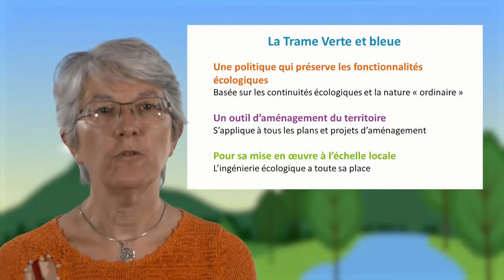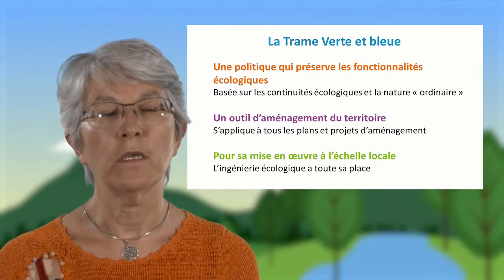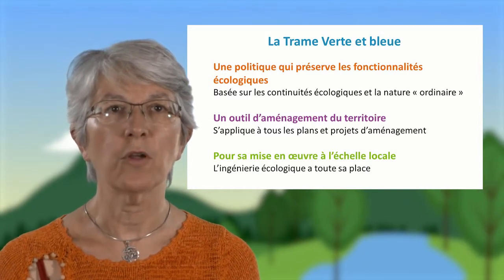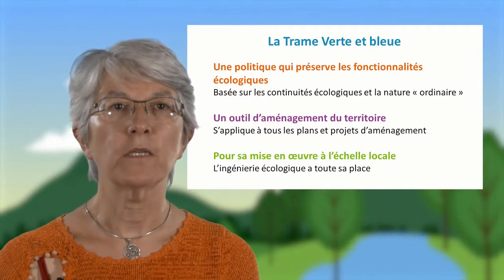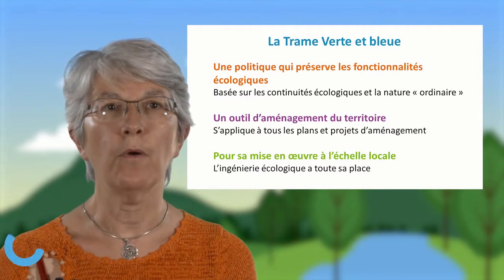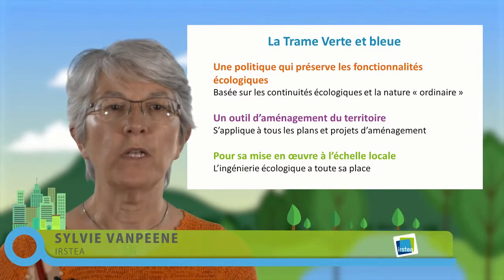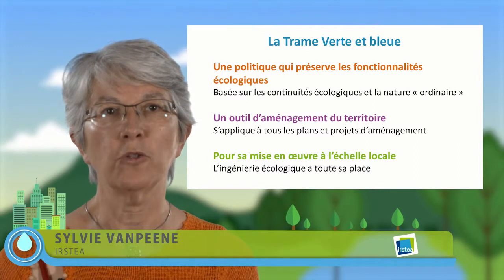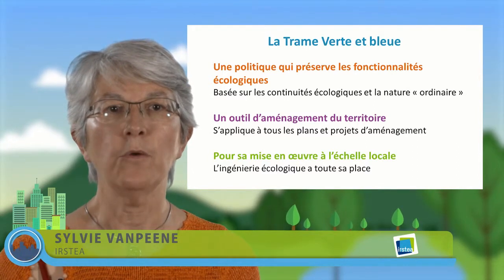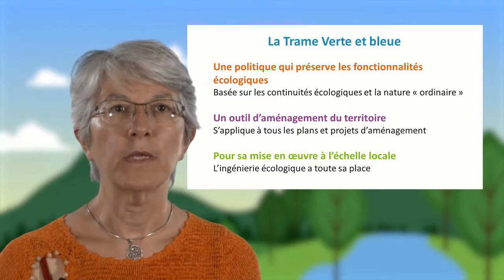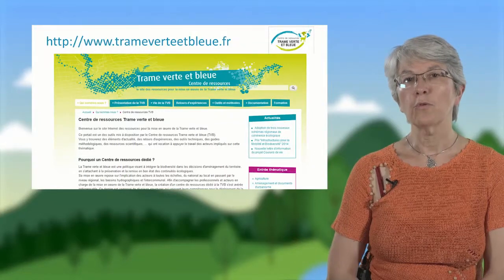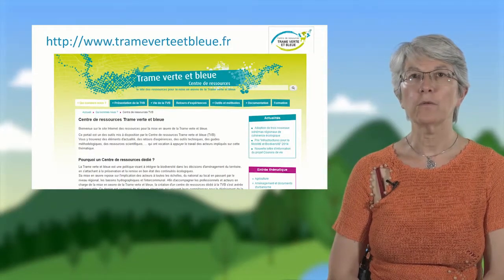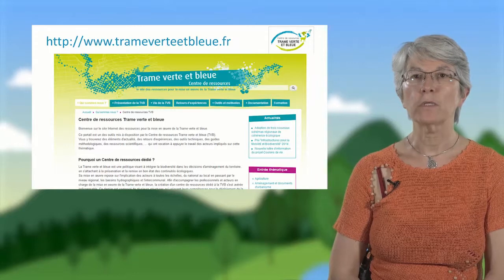En résumé, la trame verte et bleue est une politique qui préserve les fonctionnalités écologiques, basée sur les continuités écologiques qui comprennent les réservoirs de biodiversité et les corridors, et sur la nature ordinaire. C'est un outil d'aménagement du territoire qui s'applique à tous les plans et projets d'aménagement. Pour sa mise en œuvre à l'échelle locale, l'ingénierie écologique peut permettre de faire des restaurations de milieux de qualité pour permettre les déplacements des espèces. Le centre de ressources trame verte et bleue propose de nombreuses informations, notamment des retours d'expérience et des kits techniques.